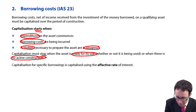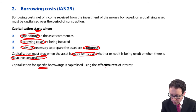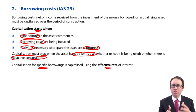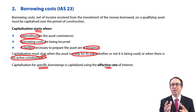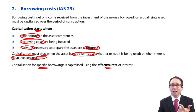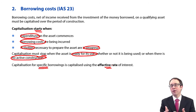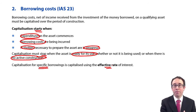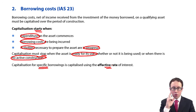When using specific borrowings, we will use what is referred to as the effective rate of interest. When we get to the financial instruments chapter later in the syllabus, we'll see two rates of interest attached to a loan: the coupon rate — the legal amount of interest you must pay — and the effective rate, which takes account of matching the loan interest over the life of the loan. If you have both the coupon rate and the effective rate, you need to use the effective rate, not the coupon rate.